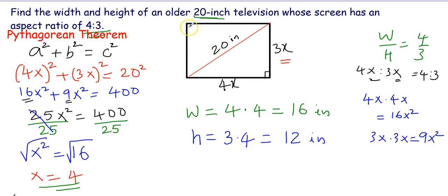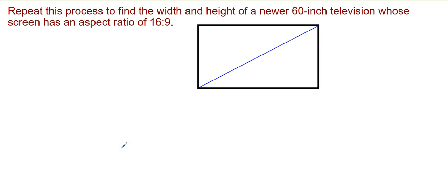Given the size of the television screen and the aspect ratio, by making use of the Pythagorean theorem we can figure out the width and height of the screen. Now we will repeat this process to find the width and height of a newer 60-inch television whose screen has an aspect ratio of 16 to 9. The diagonal here is 60 inches.